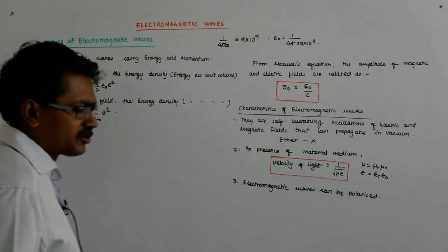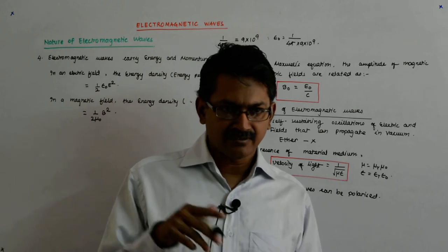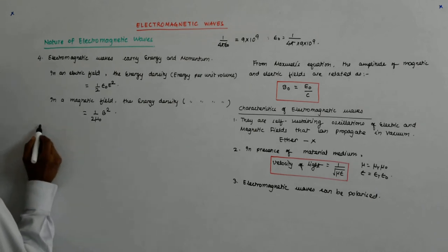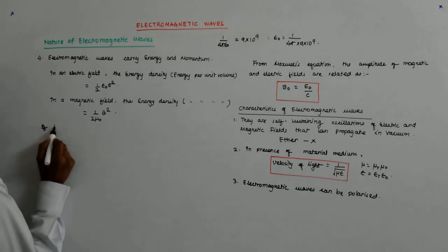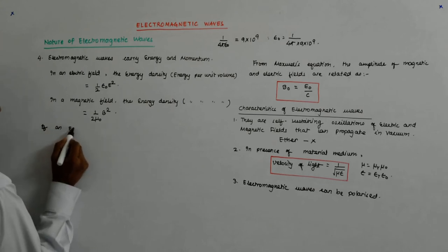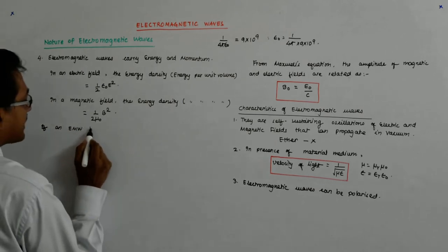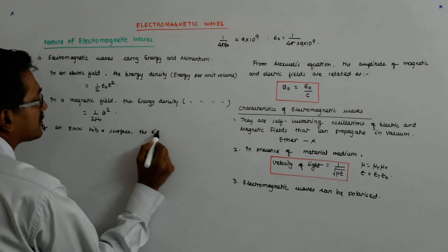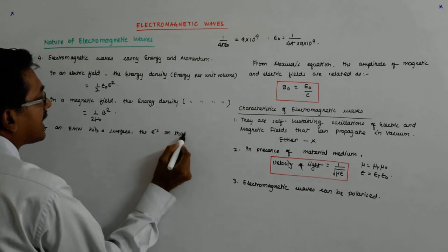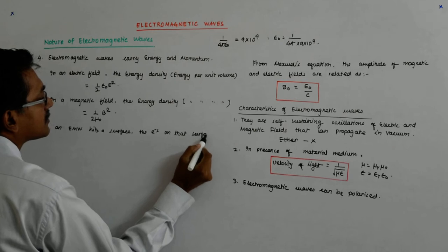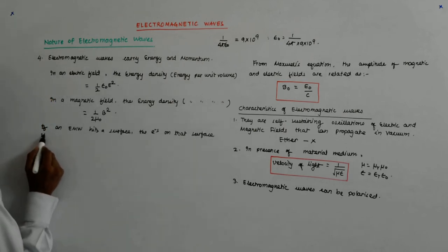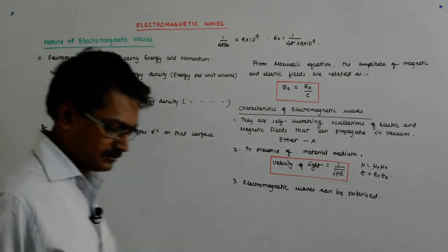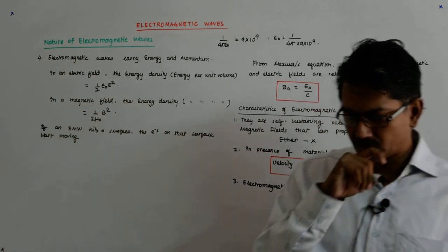Now, what happens? Suppose this electromagnetic wave comes and hits the surface. Then what happens? If an EMW, this I'll be using for electromagnetic waves, hits the surface, the electrons on that surface start moving in what direction?